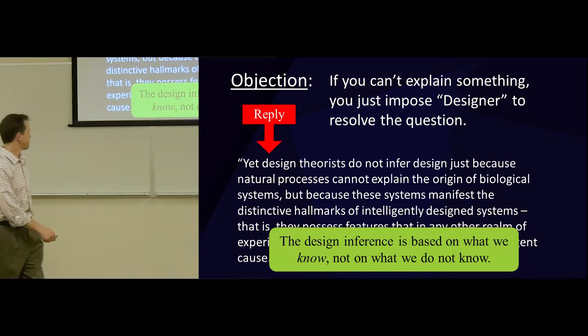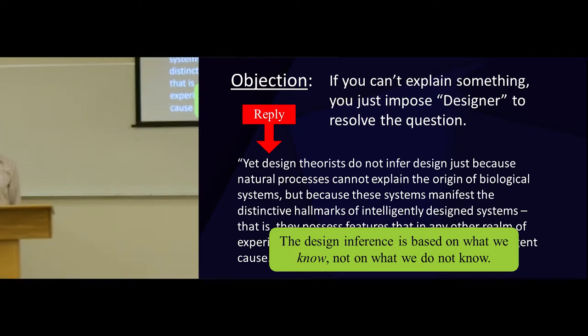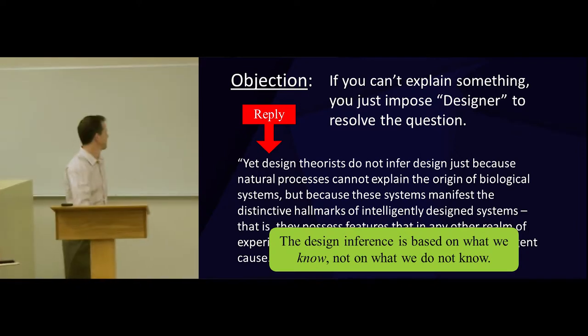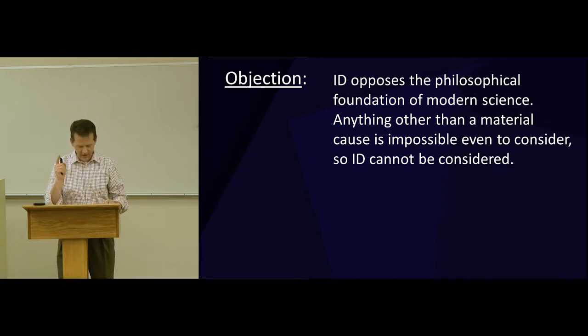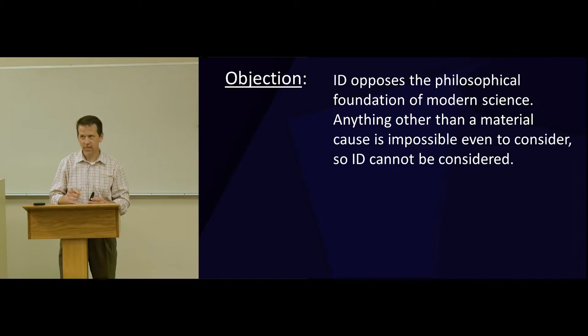How complicated does an arrowhead have to be to look intelligent? Not complicated. If you had anything that approached the complexity of that system that we just walked through, no one would question that in any realm of science, except biology. They would question it. There's a reason for that. Second objection. Intelligent design opposes the philosophical foundations of modern science. Anything other than a material cause, materialism, is impossible even to consider. Intelligent design should not be considered. Because it's not science. That's why they keep it out of schools. That's the argument. Intelligent design is not science. And it's not science because it's not based in materialism.